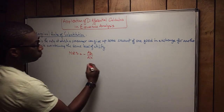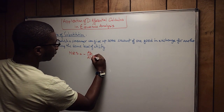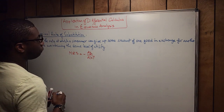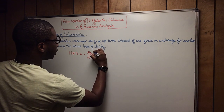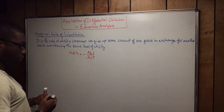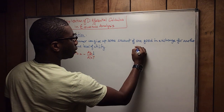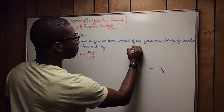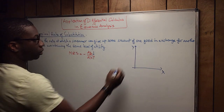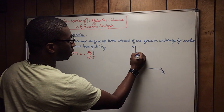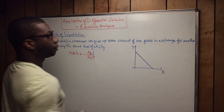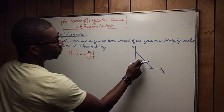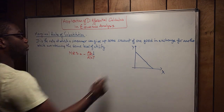When the consumption of X increases, the consumption of Y decreases. Let me graph that: you have X on one axis and Y on the other. It is a downward-sloping line — as X increases, Y decreases. This is the marginal rate of substitution.